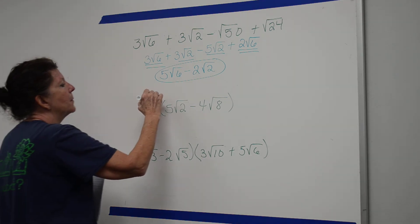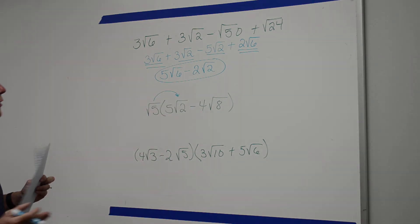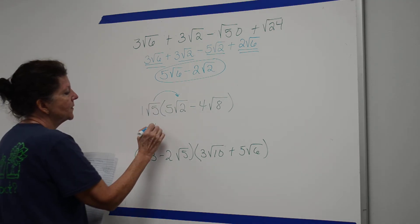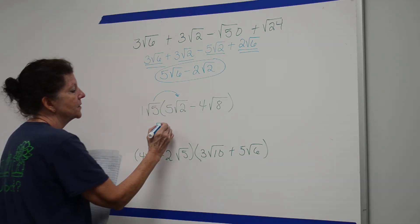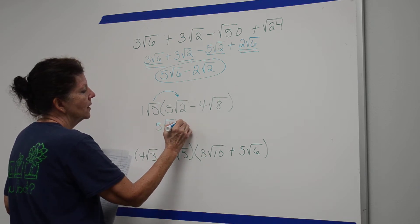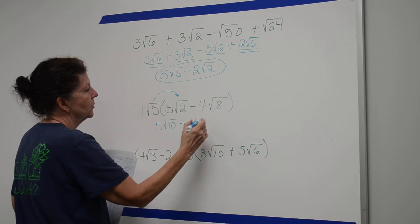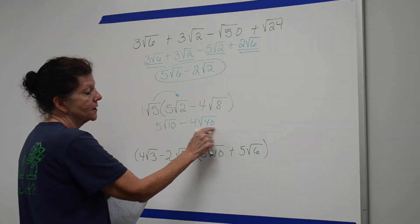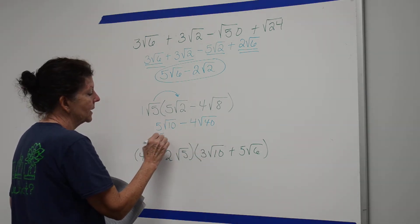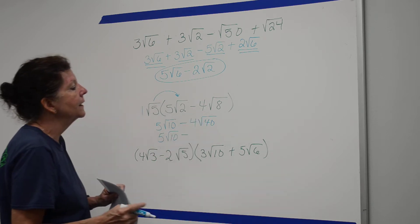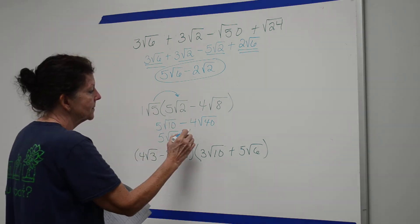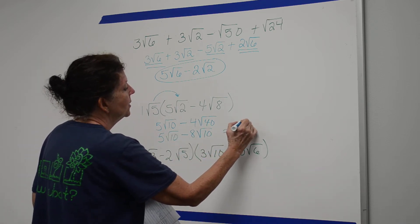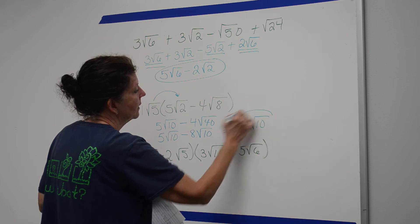Down here I have the distributive property — multiply what's underneath the square roots together and what's on the outside together. There's an understood 1 outside, so it's 1 times 5, or 5, and the square root of 5 times the square root of 2 is the square root of 10. Minus: 4 times the square root of 40. Since 40 is 4 times 10, that's 2 times 4, or 8, on the square root of 10. These two can combine, so the final answer is negative 3 on the square root of 10.